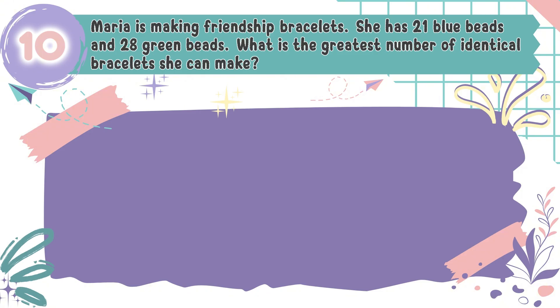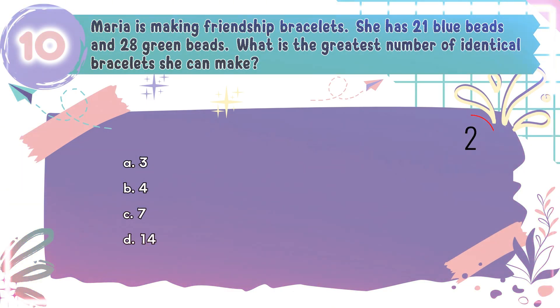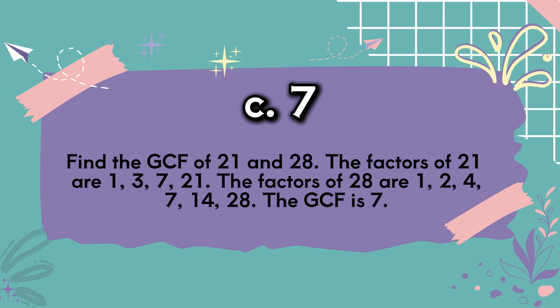Question number 10: Maria is making friendship bracelets. She has 21 blue beads and 28 green beads. What is the greatest number of identical bracelets she can make? The choices are A: 3, B: 4, C: 7, D: 14. The correct answer is C, 7. Find the GCF of 21 and 28. The factors of 21 are 1, 3, 7, and 21. The factors of 28 are 1, 2, 4, 7, 14, and 28. The GCF is 7.